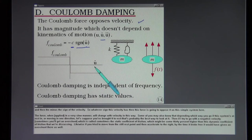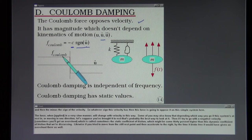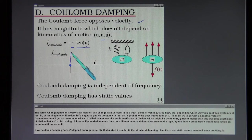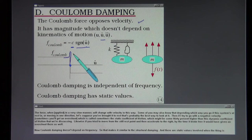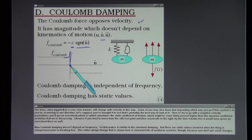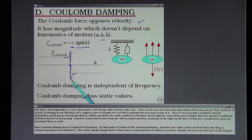The force when done in a very slow manner will change with velocity in this way. Some of you may also know that depending which way you go if the system's at rest or moving in one direction. Let's suppose you've brought it to rest. That's probably the best way to look at it. Then if I try to go with the negative velocity sometimes you'll get an overshoot which is called sometimes a static coefficient of friction which might be some, you know, 30% higher than this dynamic coefficient of friction that we're discussing. Likewise if you tried to move from a still rest point and then accelerate to the right, by the time it broke free it would have given an overshoot there as well.